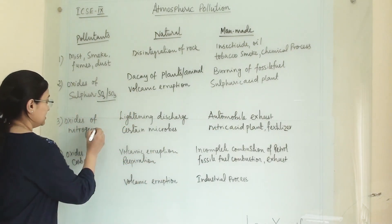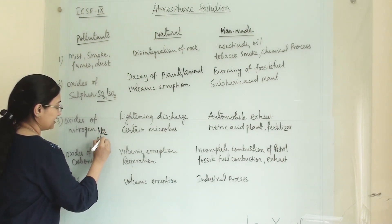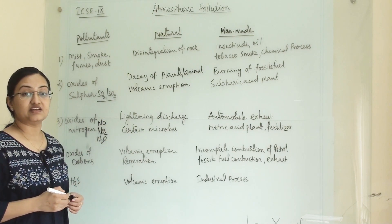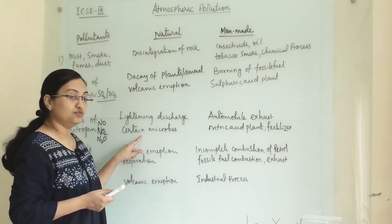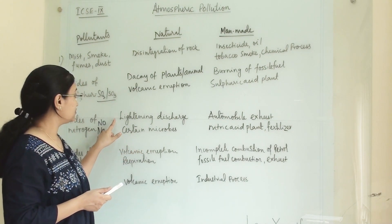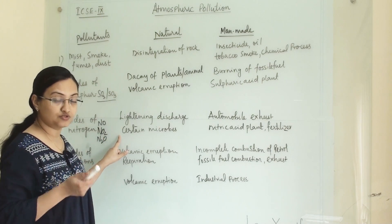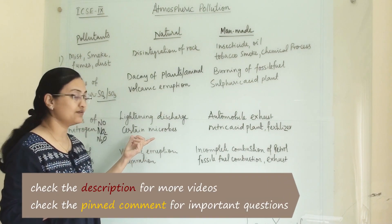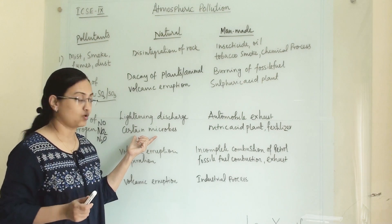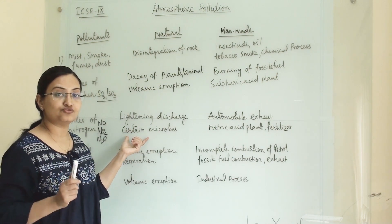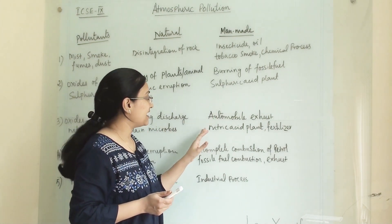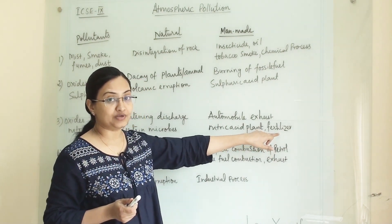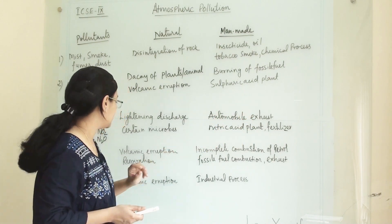Oxides of nitrogen: NO, NO2, and N2O. These oxides of nitrogen, nitric oxide, nitrous oxide, and nitrogen dioxide are precipitated in the atmosphere through lightning discharge and certain microbes. We know that in legume plant roots, nitrogen fixation bacteria precipitate nitrogen in the soil. Under manmade activity, automobile exhaust, nitric acid plants, and fertilizer manufacturing companies are the major sources of nitrogen dioxide pollutants.